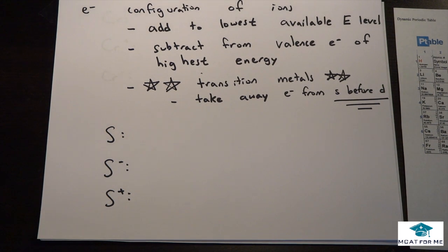This one is kind of tricky, so we're going to look at the electron configurations of ions. The rules go like this: if you're trying to add electrons, we're going to add to the lowest available energy level that's open.